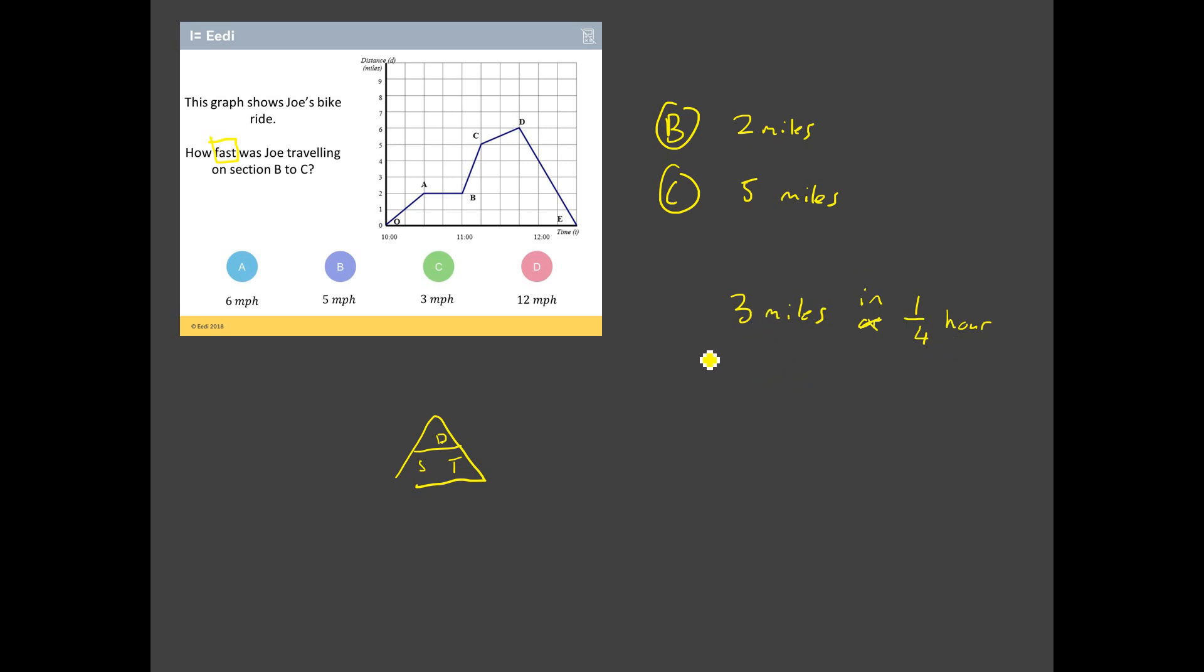If you can travel 3 miles in a quarter of an hour. I think that means he can travel 6 miles in half an hour. Which I think means he can travel 12 miles in one full hour. Can you see that? Does that make sense? 3 miles in a quarter of an hour. So, if you double the miles, you've got to double the amount of time it takes. And then if you double the miles again, you double the amount of time it takes.